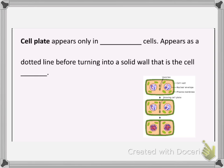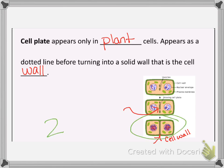Now we're going to talk about some of the physical characteristics you would be able to see during mitosis. A cell plate is one of them, but cell plates only appear in plant cells. They first begin to appear as a dotted line before turning into a solid wall that becomes the cell wall. That dotted line is the cell plate growing, and eventually it connects and makes a solid line, which turns into the cell wall, and then you have two new cells.